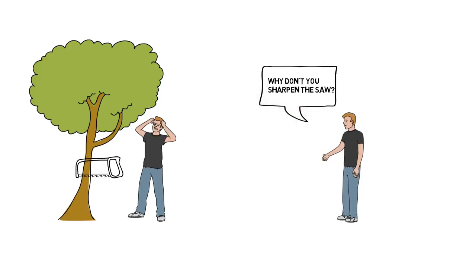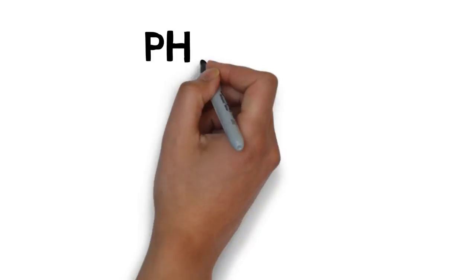And the guy goes, no, I can't do that. I need to work on cutting down the tree. And he fails to see that if he would sharpen the saw, he could cut down the tree faster. And we do this in life a lot.